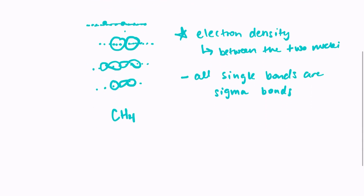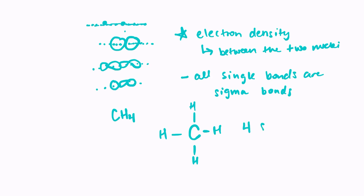So if you were given something like CH4 and asked to identify the number of sigma bonds in this molecule, all you have to do is draw it out — carbon with a hydrogen on either side. You look at your molecule and say, these are all single bonds, so there are four sigma bonds in this molecule.